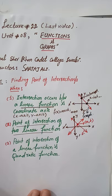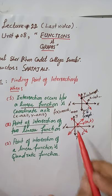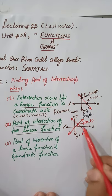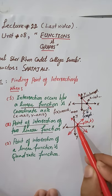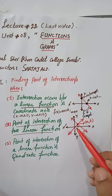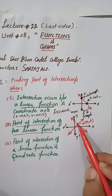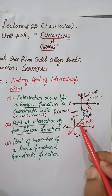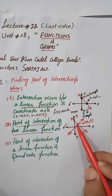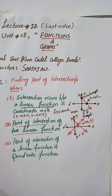One important point to remember: we already know that a point which lies on the graph of a function will always satisfy that function. So if a point lies on both graphs — meaning it is the point of intersection — that point will actually be the solution for both linear functions. It must satisfy both linear functions because it lies on the graph of both.